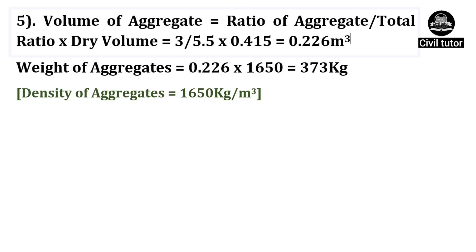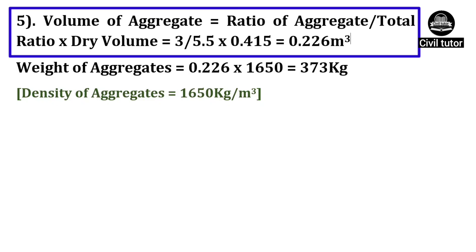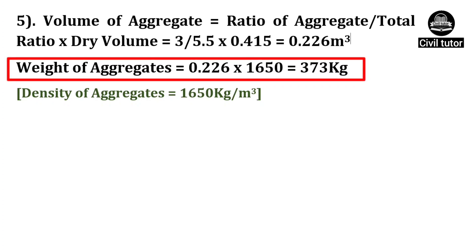Finally, the volume of aggregates will be equal to the ratio of aggregates divided by total ratio, multiplied by dry volume. The ratio of aggregates is 3, the total ratio is 5.5, and the dry volume is 0.415. On substituting these values, the volume of aggregates will be equal to 0.226 meter cube. The weight of aggregates will be equal to volume multiplied by the density of aggregates, which is 1650 kg per meter cube, giving a weight of 373 kg.